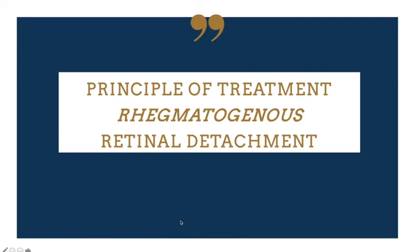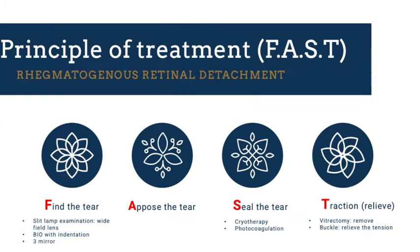Let's look at the principle of treatment for retinal detachment — buckle and vitrectomy. I simplify this as FAST: First, Find the tear because we need to treat all tears. Then we need to Appose the tear. Then Seal the tear. And finally, relieve the Traction — either by doing vitrectomy or buckle surgery.